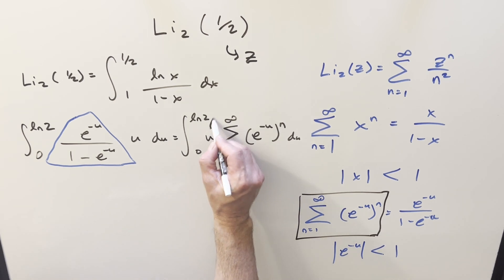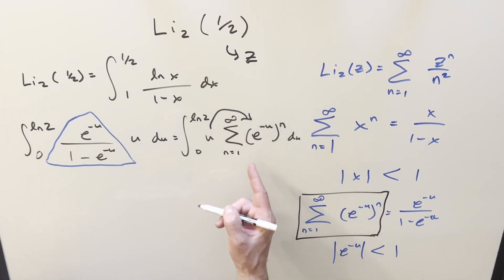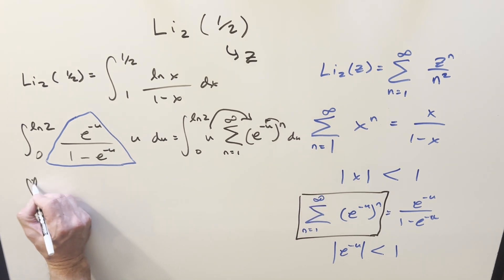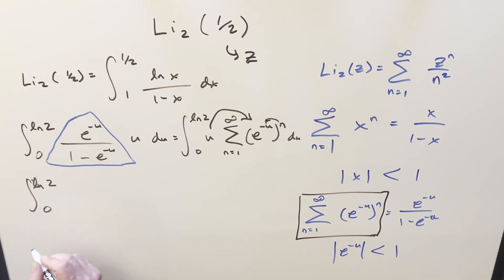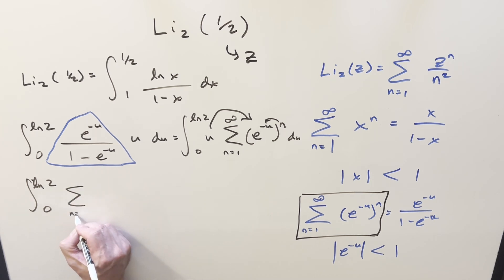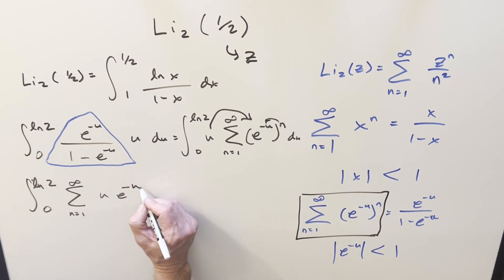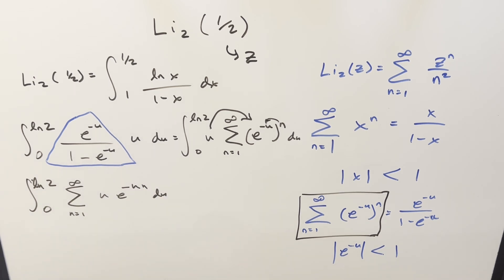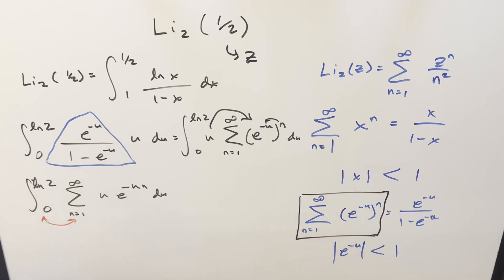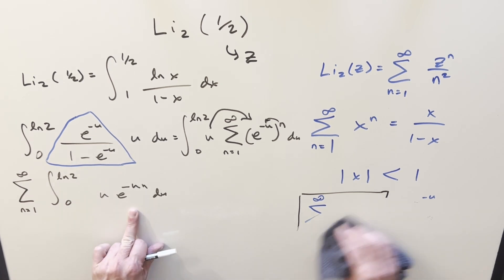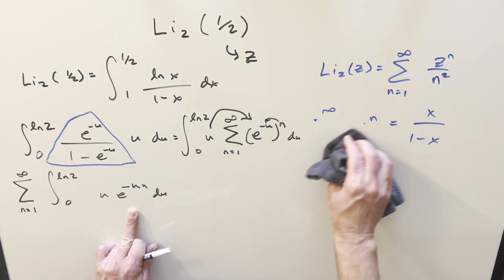So I can take what's in the integrand and replace it with the geometric series. Distributing u in and using exponent properties to distribute n, we get the integral from 0 to ln 2 of the sum from 1 to infinity of u · e^(−un) du. Then let's swap the integral with the sum — we can do this because we have absolute convergence. At this point, the integral is just integration by parts using the DI method.